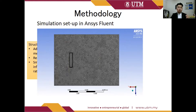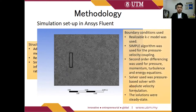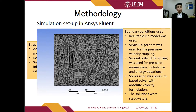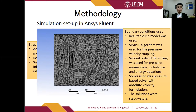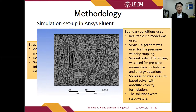This is how the meshing of the computational domain and the building looks. The Realizable K-Epsilon model was used because Xi et al. claimed it provides superior performance for flows involving rotation, boundary conditions under strong adverse pressure gradients, separation, and recirculation. The SIMPLE algorithm was used for pressure-velocity coupling because it is robust for steady-state and single-phase flow problems. Second-order differencing was used for pressure, momentum, turbulence, and energy equations for greater accuracy. A pressure-based solver with absolute velocity formulation was used, and solutions were steady state.